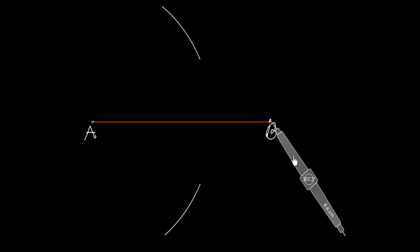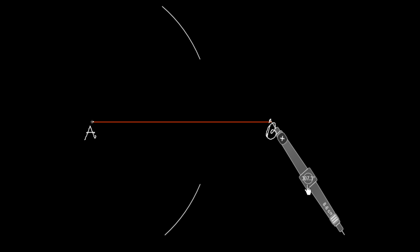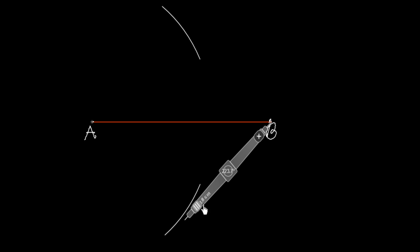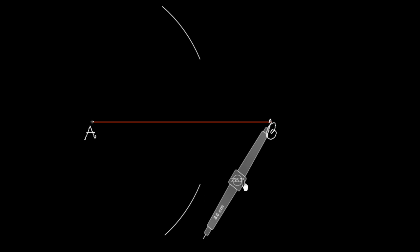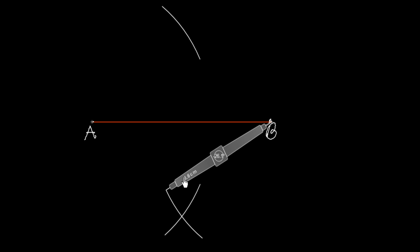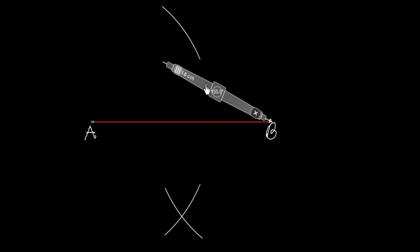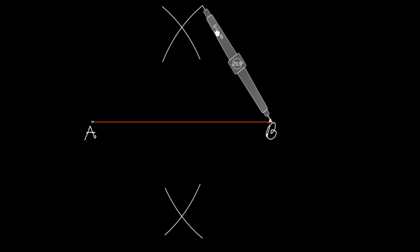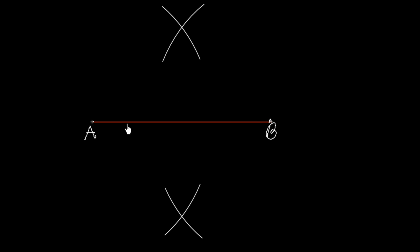Now I will cut the same radius arc from point B on both sides of this line segment. I cut an arc here on the lower side and also on the upper side. This arc we have cut on both sides of the line segment — upper side and lower side. The intersecting points of these arcs we give the names X and Y.